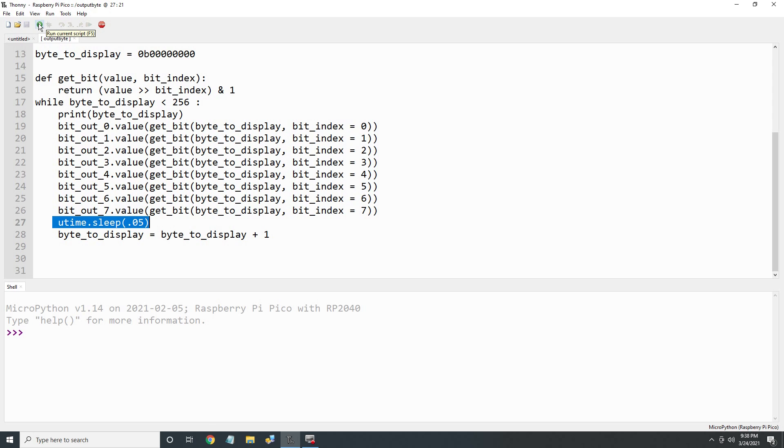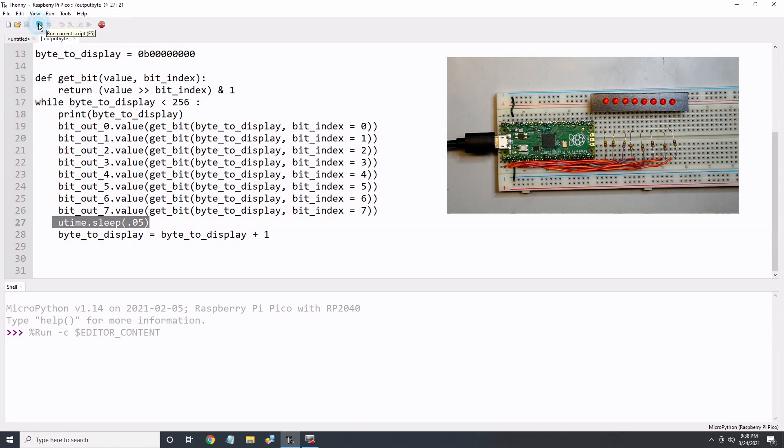Let's first set the sleep timer to 1/20th of a second. This should be slow enough for us to see if the program is working. I'll click the Run icon and it looks good. We see the counter value being output.